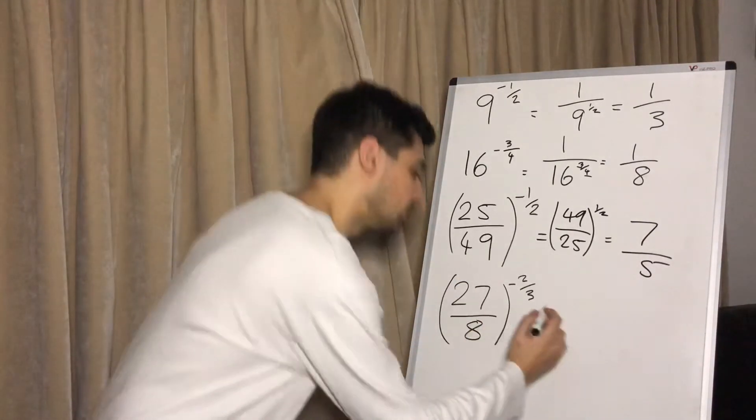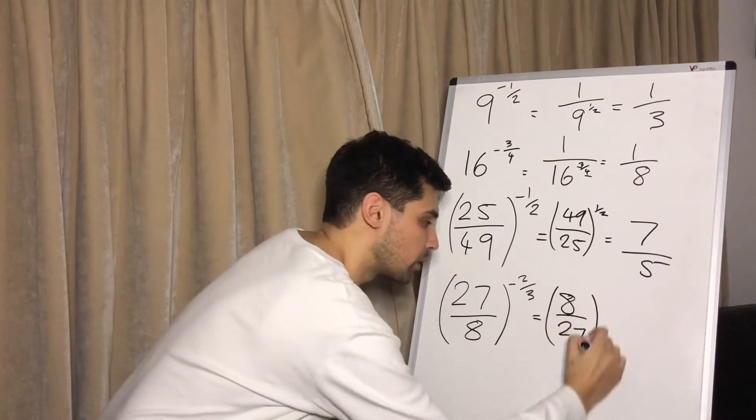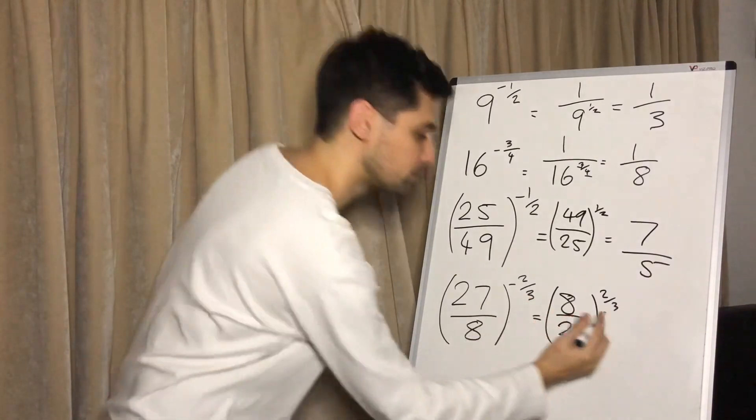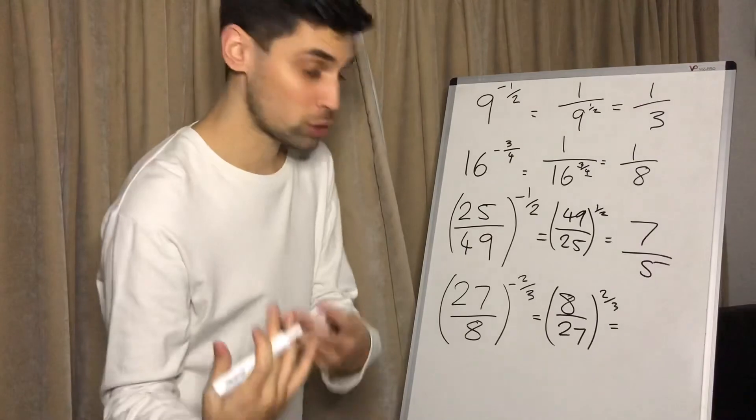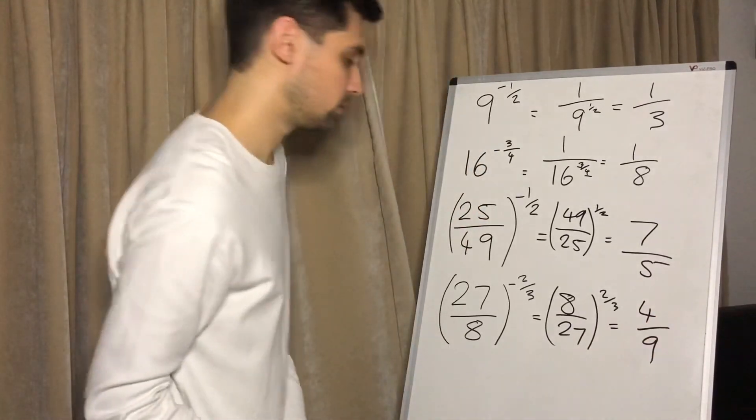Flip that upside down. Eight over 27 to the power of two thirds. Cube root both of them, which gets two over three. Then square that, which gets four over nine. Easy!